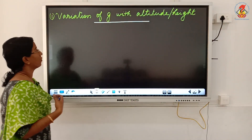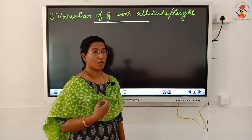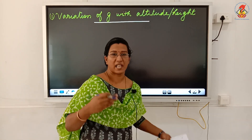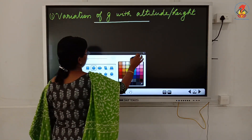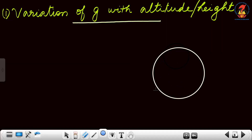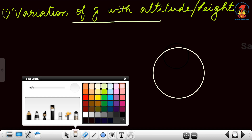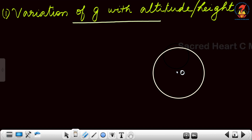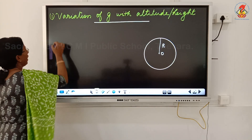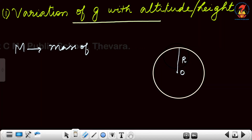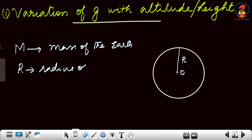Now we are going to see the variation of g with altitude or height — that is, the value of g when the object is kept above the surface of the earth at a particular height. For that we consider the earth to be a perfect sphere. Let O be the centre of the earth, R the radius, and M the mass of the earth.